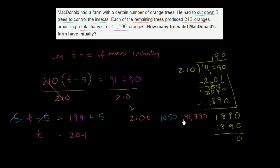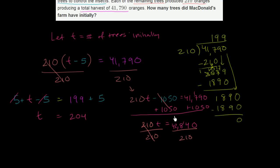And then you could add 1,050 to both sides. The left-hand side, you're just going to be left with 210t. While the right-hand side, you're going to be left with, let's see, 0 plus 0 is 0, 9 plus 5 is 14, 1 plus 7 is 8. 42,840. And now you can divide both sides by 210. And now we know where this is going to go. t is going to be equal to 42,840 divided by 210, which is equal to 204.